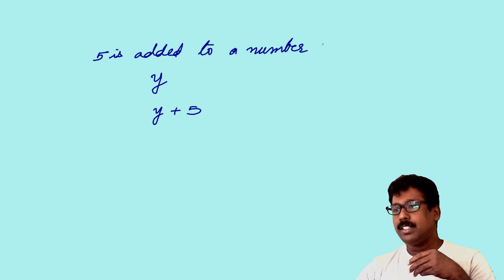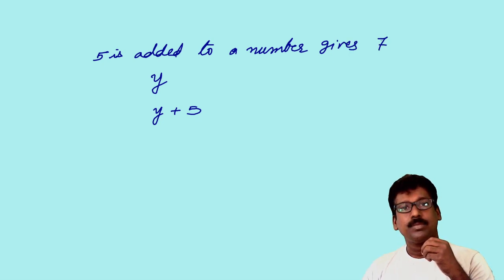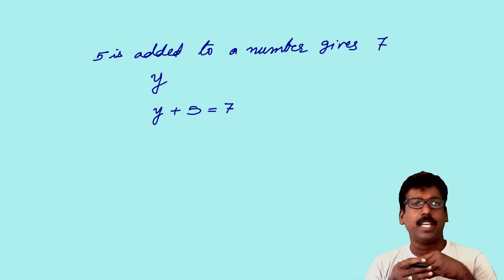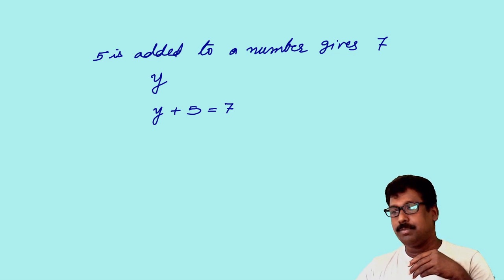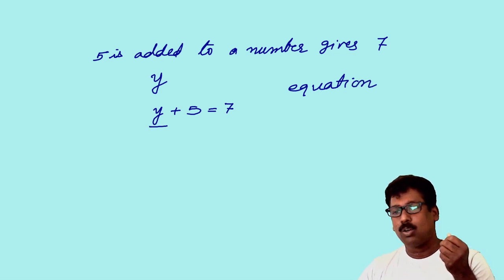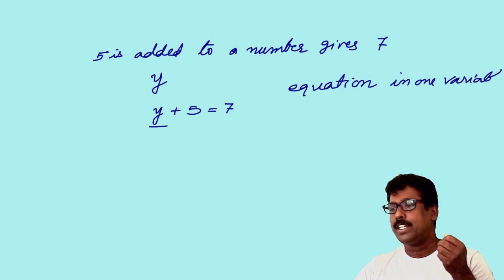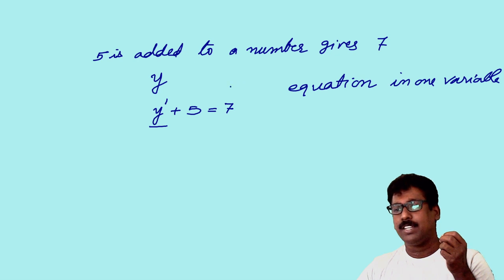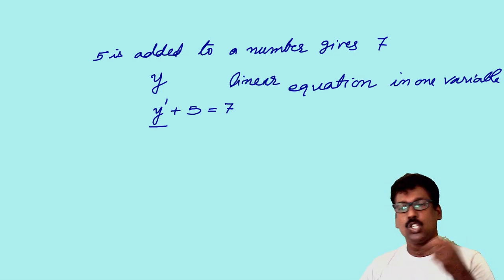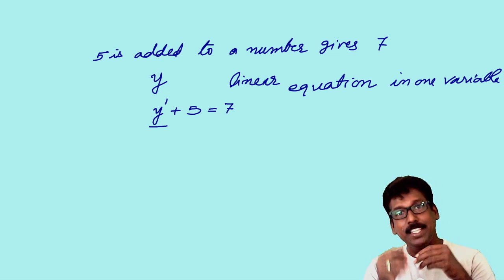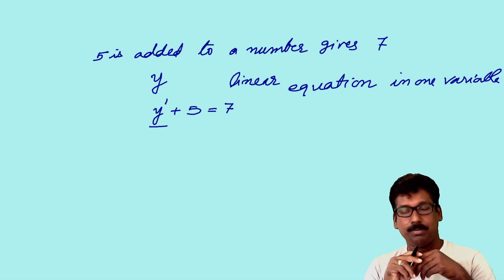Let me complete this sentence: '5 is added to a number gives 7.' You can write this as y plus 5 is equal to 7. This expression we can call an equation because it contains an equals sign. How many variables are used here? Only one — y. So this is an equation in one variable. The highest power of the variable is one, so y plus 5 = 7 is a linear equation in one variable.